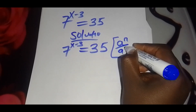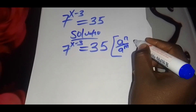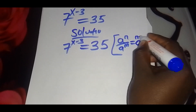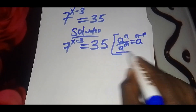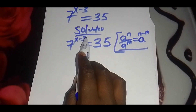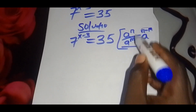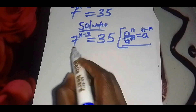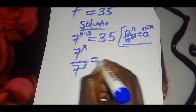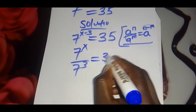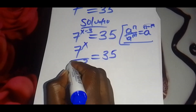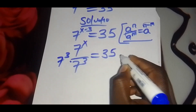Now, if you have the identity a raised to n divided by a raised to m, this is the same as a raised to n minus m. As you can see, 7 raised to x minus 3 is in this form. So let's transform it so that we have 7 raised to x divided by 7 raised to 3, and this is equal to 35.